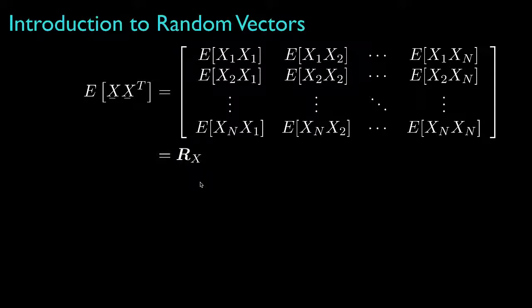Here, I've used the capital letter R to denote the correlation matrix, and the subscript X denotes that it's the correlation matrix for the random vector X with itself.